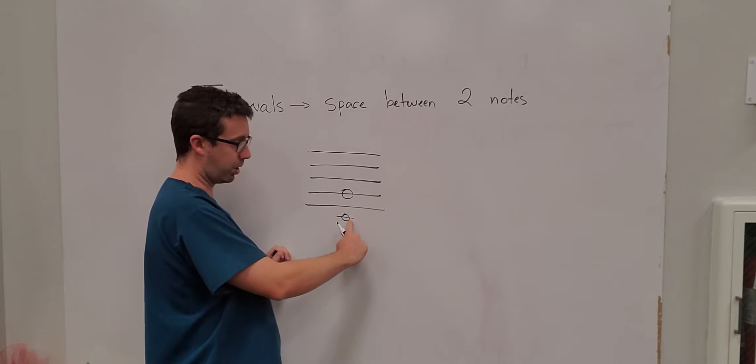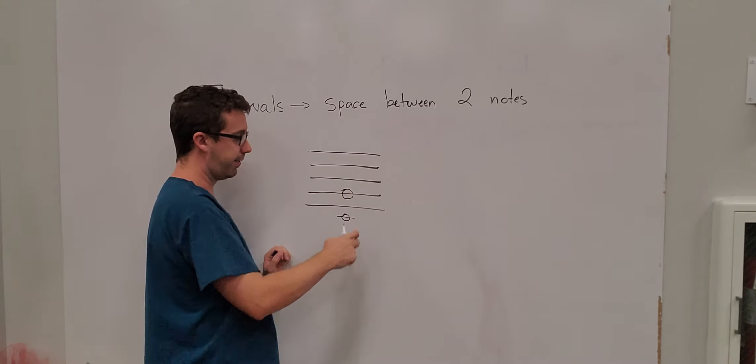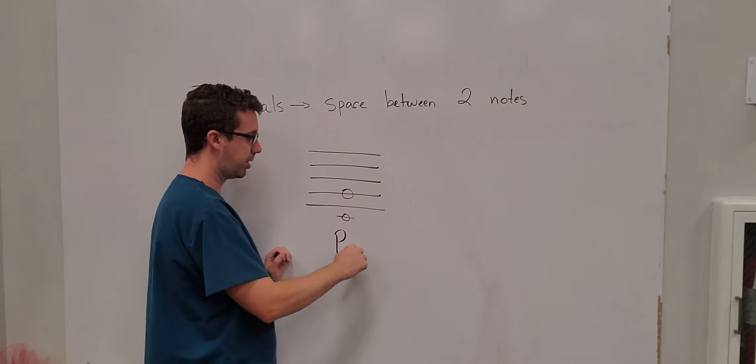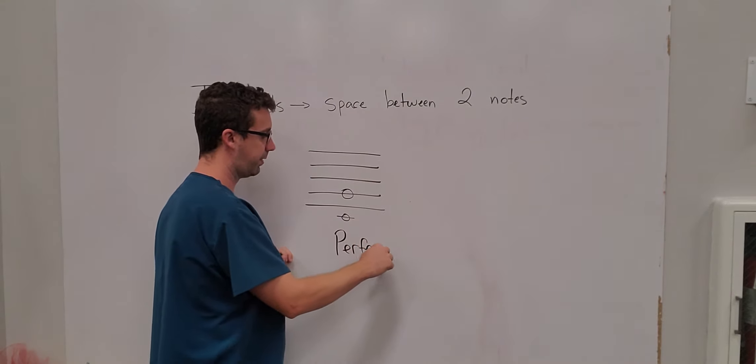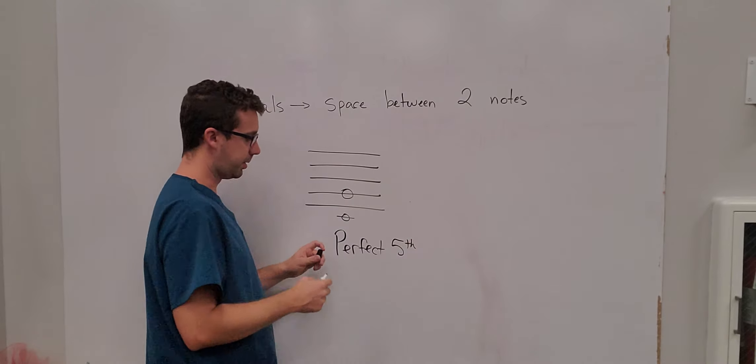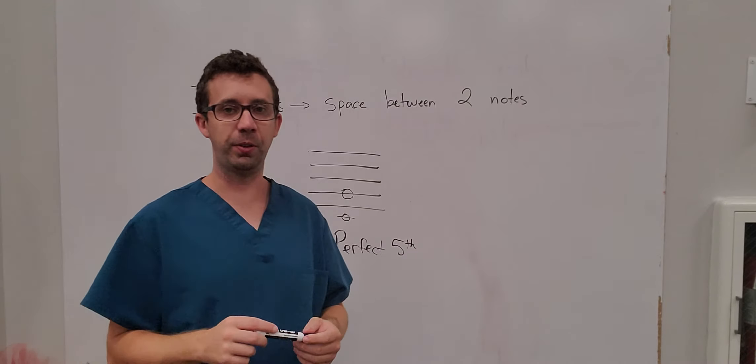So C is on this line so that's one, two, three, four, five. So this is a perfect fifth. It's a specific interval called a perfect fifth.